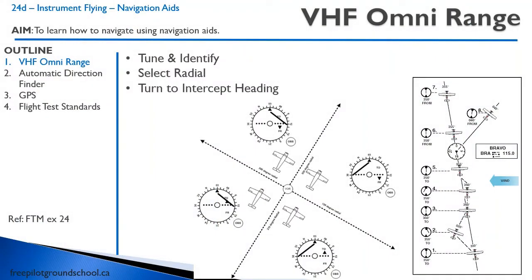Let's begin with the VHF omni range, also known as the VOR. The VOR is a position-sensitive navigation aid that works in the VHF frequency band, just above the FM radio band. It starts at 108 megahertz and goes up to about 117.95 megahertz. The theory is covered in ground school, but I'm going to talk about the procedure — how to intercept and track a radial.